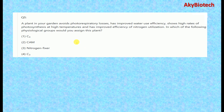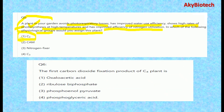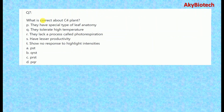Question five: a plant in your garden avoids photorespiratory losses, has improved water use efficiency, shows higher rates of photosynthesis at higher temperatures, and has improved efficiency of nitrogen utilization. If a plant shows all these features, you would categorize it as a C4 plant. Question six: the first carbon dioxide fixation product of a C4 plant is oxaloacetic acid.